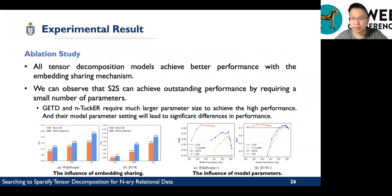Generally, in this paper, we propose two mechanisms. First, embedding sharing. Second is the sparse core tensor. For the first part, all tensor decomposition models achieve better performance with the embedding sharing mechanism. We can see that NCP, GETD, and S2S achieve good performance with embedding sharing.